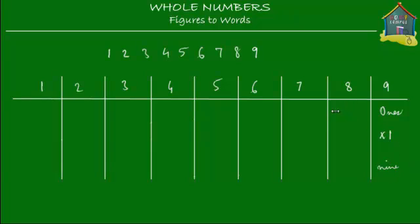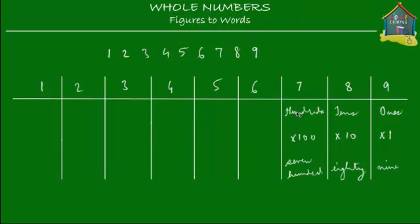Now 8 is in the 10s place, so 8 is not just 8 — its value is 8 times 10, which is 80. For 7, it is in the 100s place, so its value is 7 times 100, which is 700. Then 6 is in the 1,000s place — after 1s, 10s, and 100s comes 1,000s — so its value is 6 times 1,000, which is 6,000.